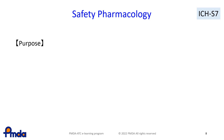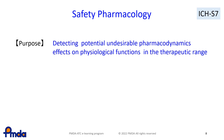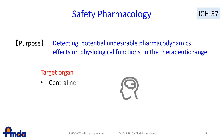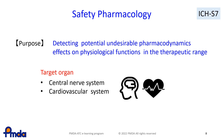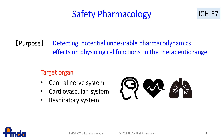Safety pharmacology studies aim to investigate whether a pharmaceutical agent exerts any adverse effect on physical function in humans. Evaluation items include the central nervous system, cardiovascular system, and respiratory system. Particularly with regard to the cardiovascular system, detailed examinations such as measurement of the electrocardiogram are conducted.